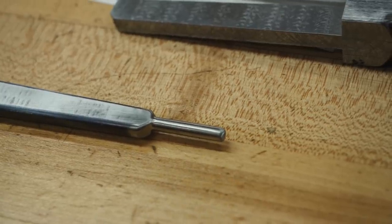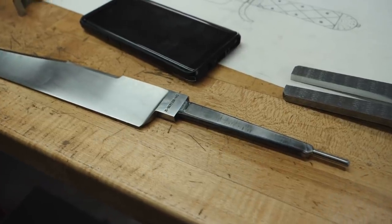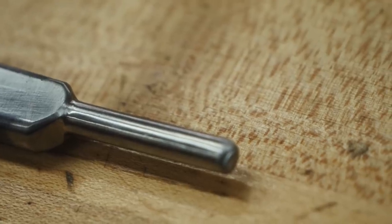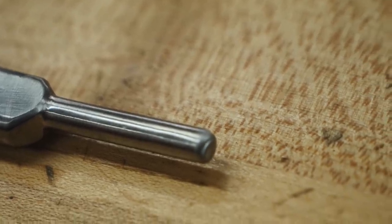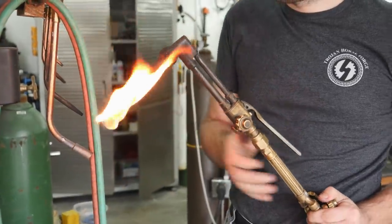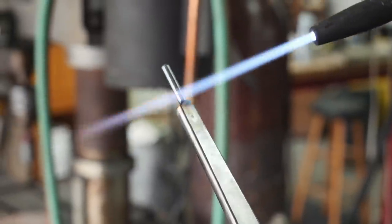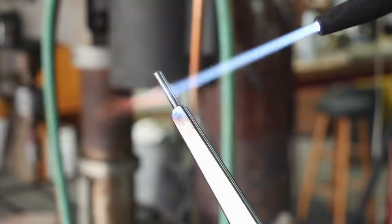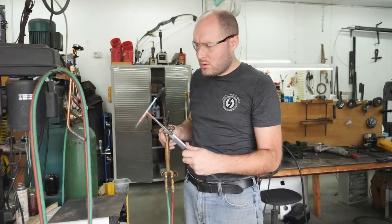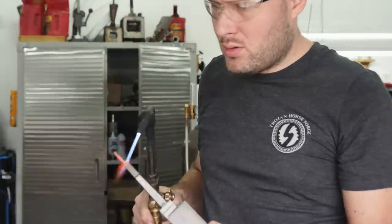I've ground the end of the tang to 3/16 inch diameter round. That's the size I need for the 10-32 threads that we're going to add later. Right now, the end of the tang is very hard, so I use a torch to heat it up to about 1500 degrees and then let it air cool. That'll soften it a little bit, allowing me to cut those threads in.